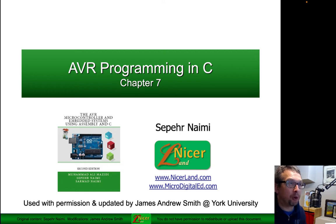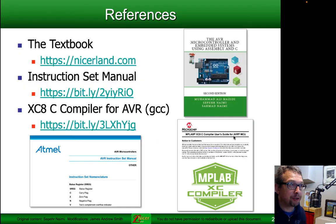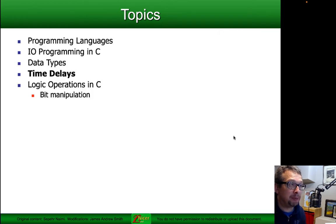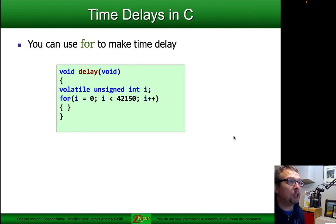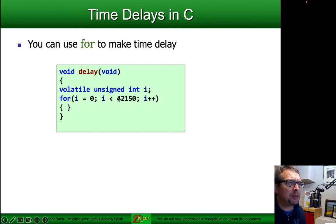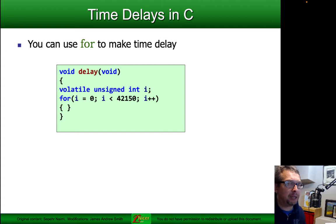We're going to talk about programming in C with the AVR microcontrollers, and this time we're going to talk about time delays. You can use loops like a for loop to create an arbitrarily long or short time delay. Basically, you're doing nothing inside of the loop, and you set some numeric value for the number of times that you loop. If that number is long enough and you calibrate it properly, you can get fixed delays this way.